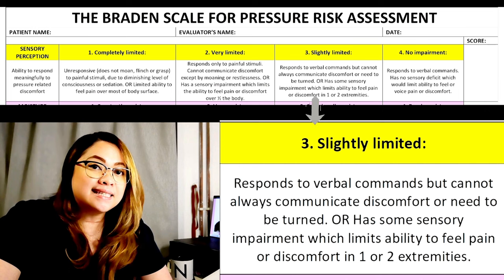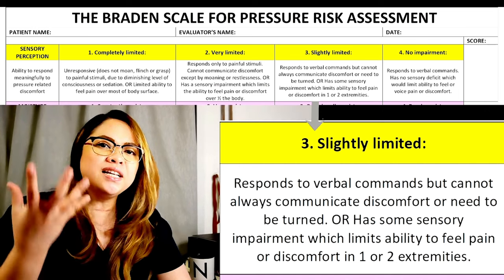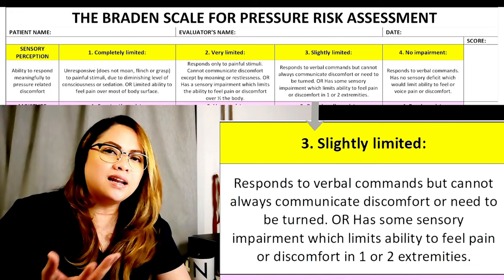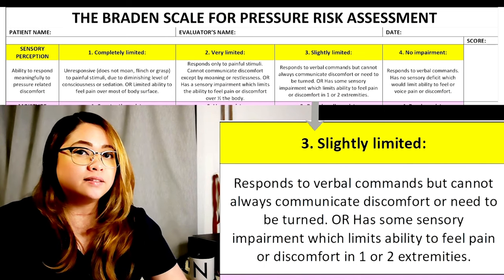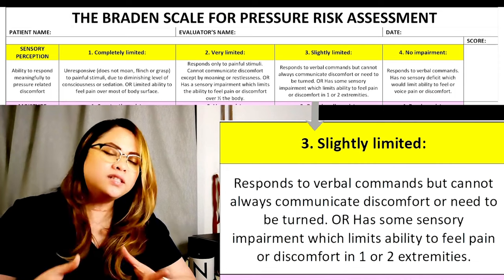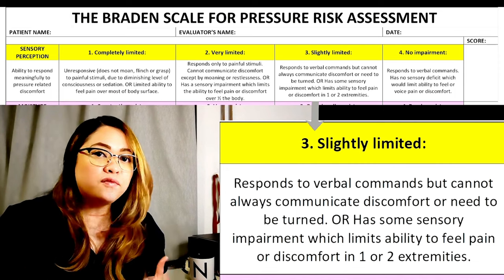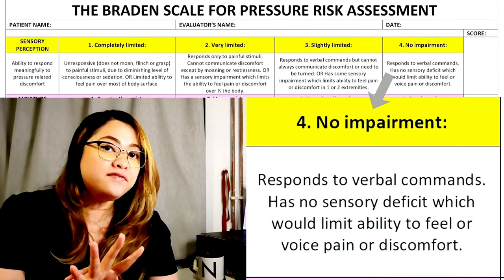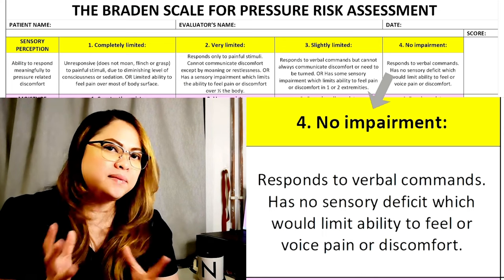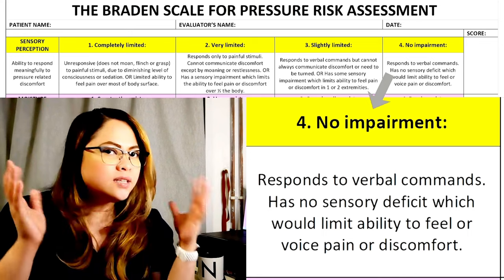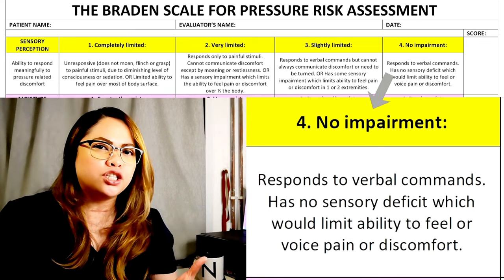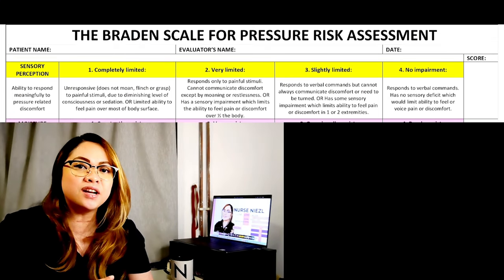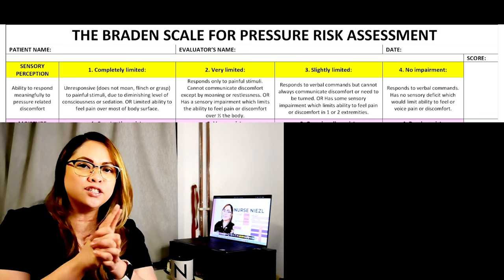Rate three for slightly limited — the patient responds to verbal commands but cannot always communicate discomfort or the need to be turned, or has some sensory impairment limiting the ability to feel pain in one or two extremities. Rate four for no impairment — the patient responds to verbal commands and has no sensory deficit limiting the ability to feel or voice pain or discomfort. That's our sensory perception, rated one through four.